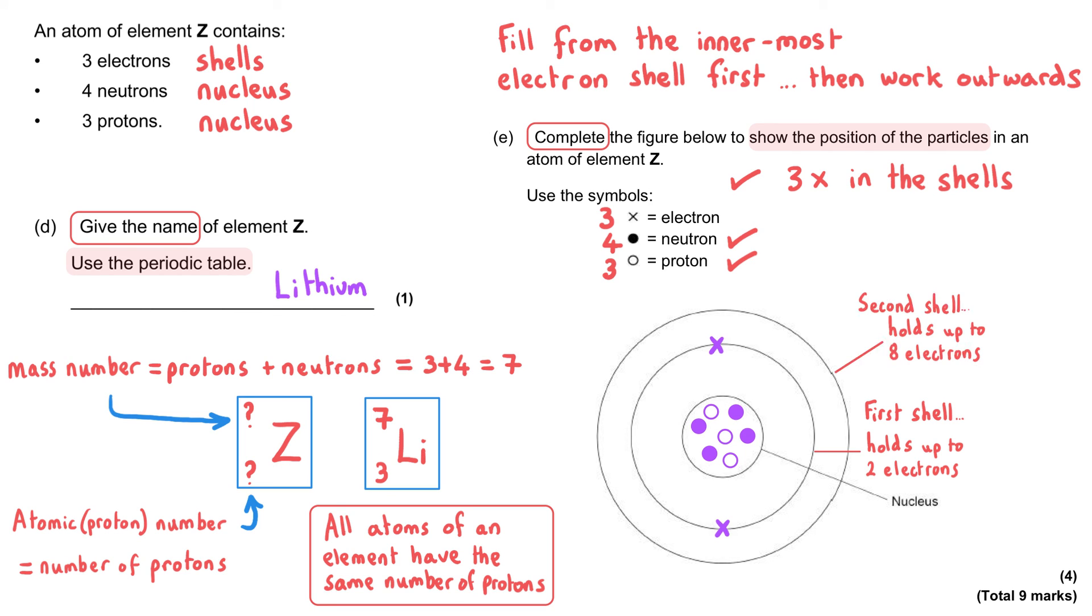And then we work our way out to the next shell. And the second shell can hold up to eight electrons before it is filled. And since we need to put three electrons in in total, we actually only have one electron left. And so that third electron needs to go into the second available shell. And so we might say we've got an electronic structure of two comma one, where we've got two electrons shown as crosses in the first shell and one electron in the second shell.